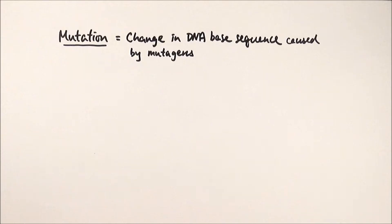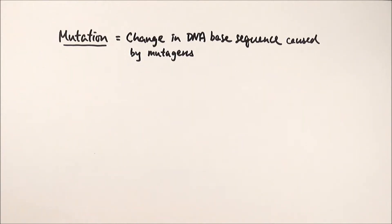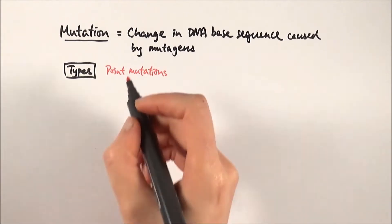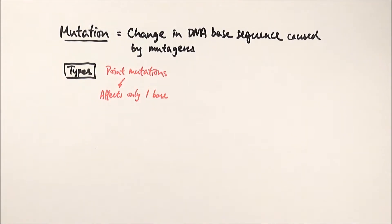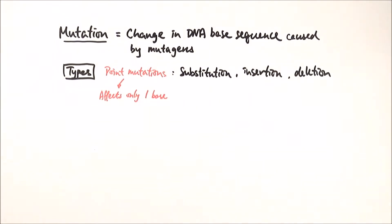There are actually a few different types of mutations but we'll put them into groups. First of all we have point mutations, and point mutations are those that affect only one nucleotide. There are three particular types within point mutations: substitution, insertion, and deletion.